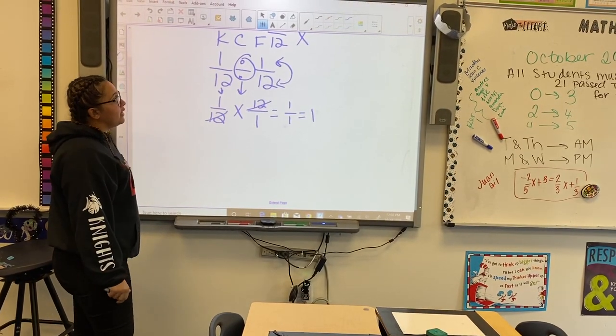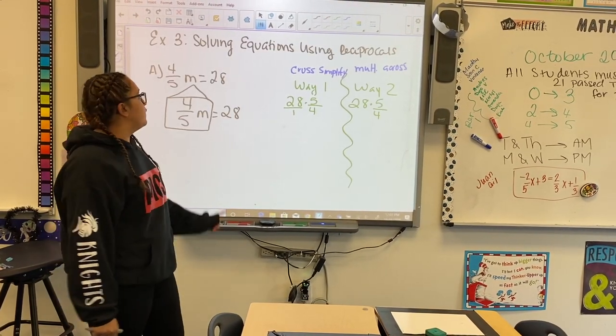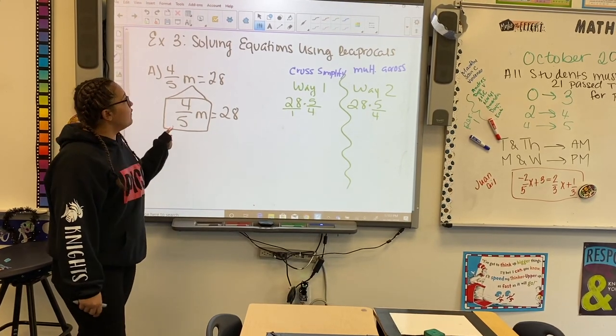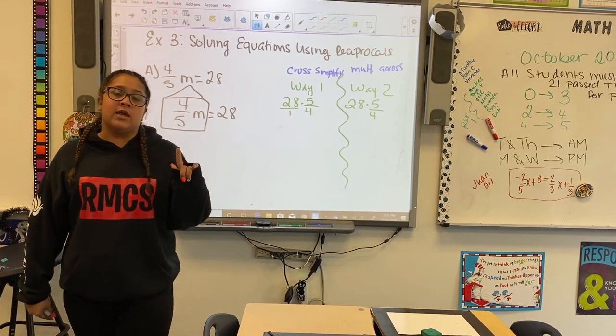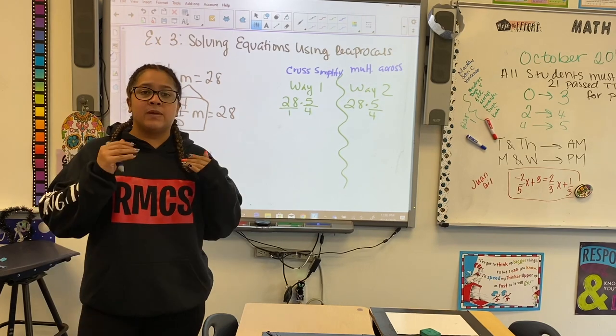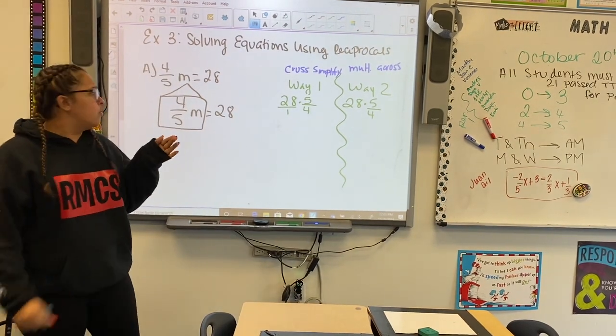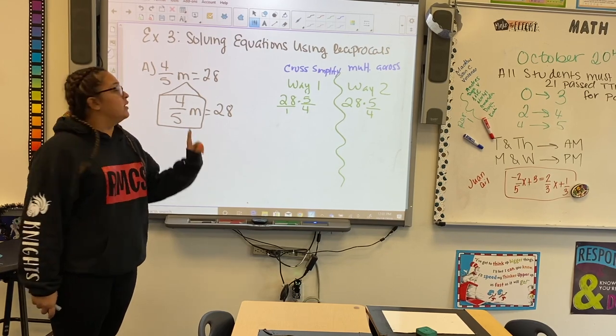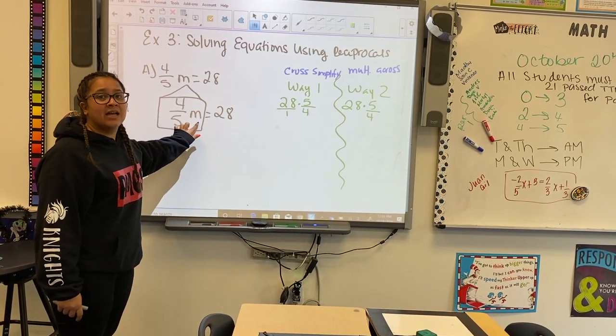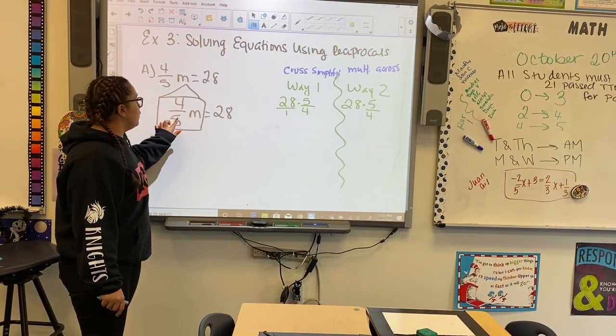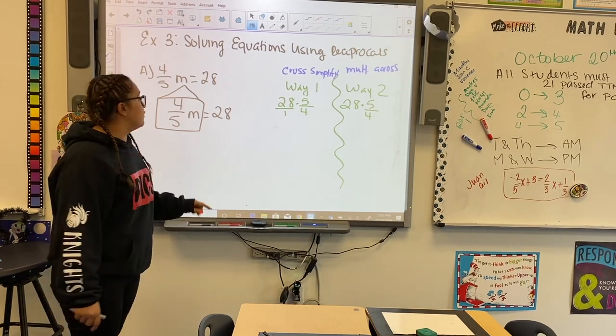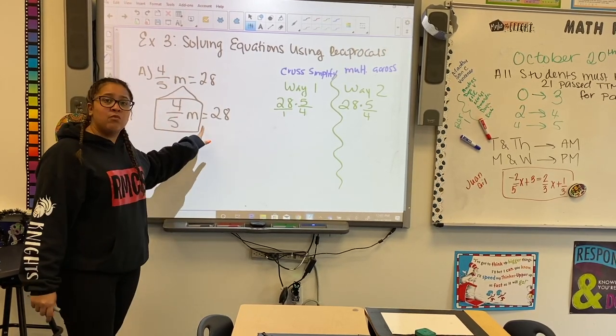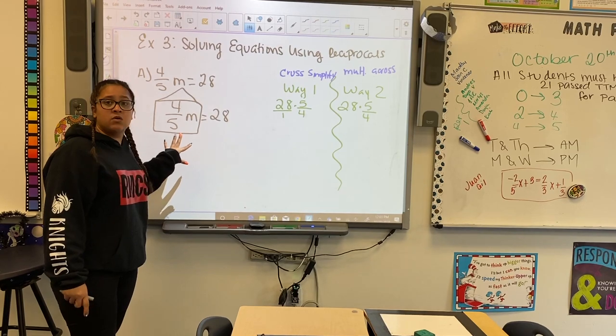So with that being said, we're going to look at an equation with a fraction attached to a variable. So I have 4 over 5, m equals 28. I'm going to rewrite my problem so that I could have space to work, and I can draw my little house. Ask myself, whose house is it? It's m's house. Who's attached to the m? 4 over 5. So who do we have to get rid of? 4 over 5, so that m will be alone on this side of the equal sign.